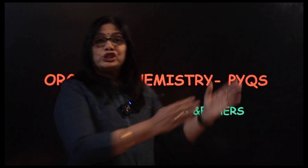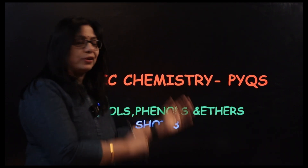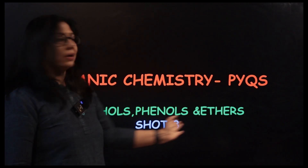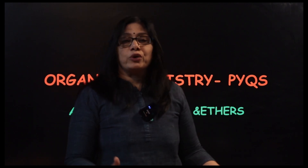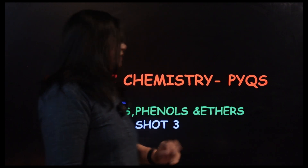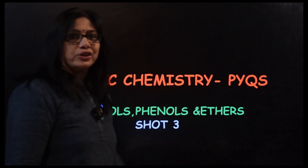Today we are going to do Short 3 from Alcohols, Phenols and Ethers. We already completed Short 1 and Short 2 and discussed many questions. So we are going to see a few more questions in today's session from the second chapter of Organic. Prasanna here. Welcome to my platform, ChemSmart. Let's see what the questions are.